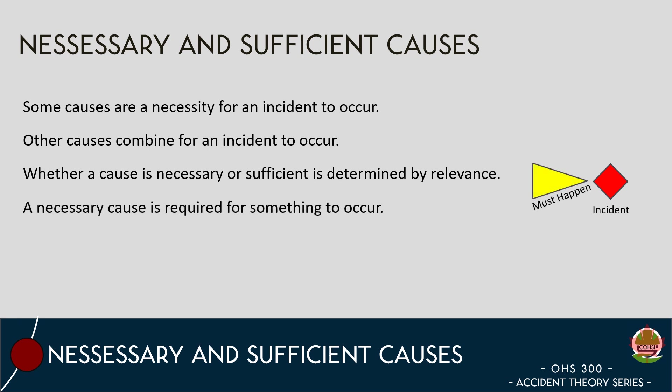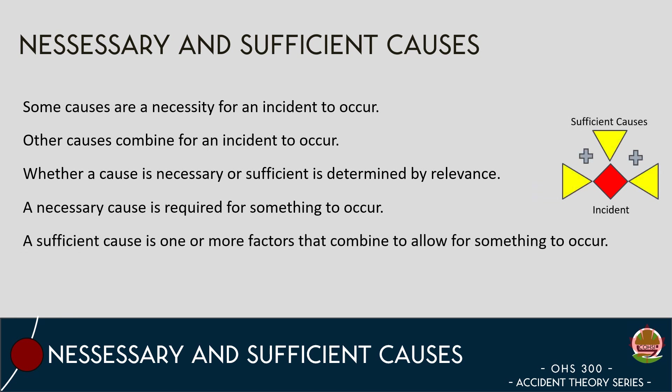These causes can be separated into necessary or sufficient causes based on their relevance in creating an event. A necessary cause is when a factor is required to be present for something to occur. Although a necessary cause is required for something to take place, it is not necessarily the cause itself. A sufficient cause is one or more factors that combine and allow an incident to occur.